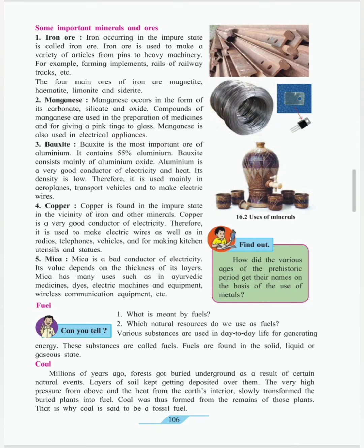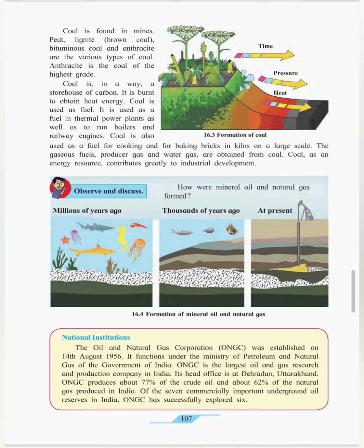Coal is found deep inside the soil. When forests got buried underground as a result of certain natural activities, coal is prepared. Layers of soil kept getting deposited over them, and due to those layers, there was an immense amount of temperature and pressure, and the things which got buried deep inside the soil got converted to coal. Thus, coal was formed from the remains of plants, which is why coal is said to be a fossil fuel. Coal contains carbon, therefore it is black in color. Coal is used for different purposes like cooking and for making bricks. It is also used for different machineries. Few years ago, there used to be railways which worked on coal. It is one of the energy resources contributing greatly to industrial development. Thank you.